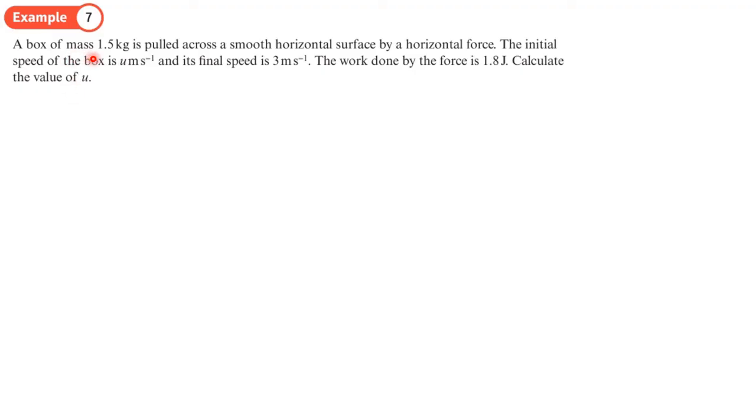A box of mass 1.5 kg is pulled across a smooth horizontal surface by a horizontal force. The initial speed of the box is u and its final speed is 3. The work done by the force is 1.8 joules. Calculate the value of u. I'm drawing a diagram with a smooth horizontal surface, a box of mass 1.5 kg with initial speed u and final speed 3.